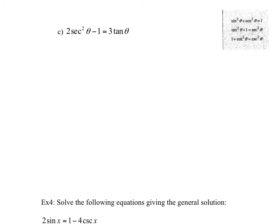For this next example, I want to make reference to the formula sheet. The one line I want to look at is the Pythagorean identity. Because if you look at the question, we have secant squared and tan. I can't change tan into secant, but I can change secant squared into tan using this formula. So secant squared becomes tan squared plus 1. Replacing secant squared with tan squared theta plus 1 and then minus 1 equals 3 tan theta. Now I only have tan theta in this equation — you want to change all your trig functions to the same trig function with the same angle.